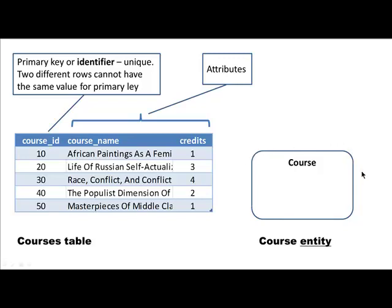In the relationship between entity relationship diagrams and tables, you have things called entities — and every entity we create will become a table in the final design. This course table might have resulted from an entity called 'course.' In entity relationship diagramming, we represent an entity by a rectangle or rounded rectangle, and every entity has a name. Since an entity is going to become a table, we need some way to represent the various attributes or columns. In every entity you have attributes — there is a primary key attribute, which in this case we have called course ID, indicated by a hash sign.